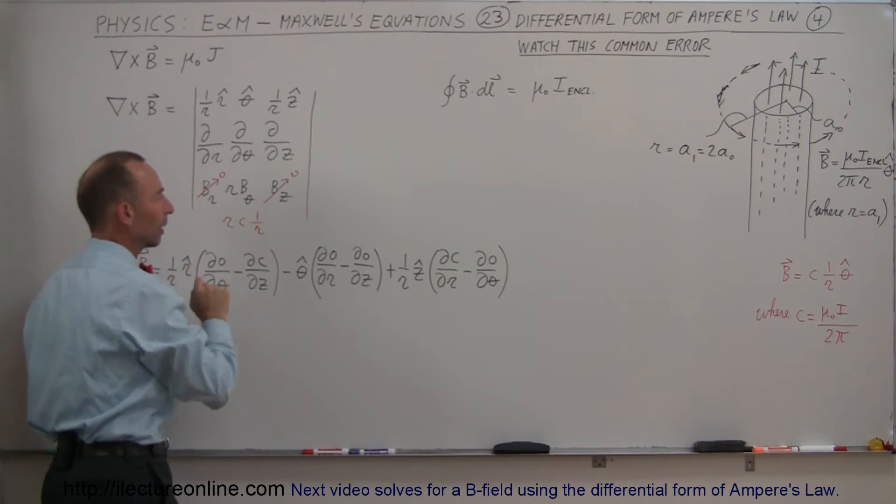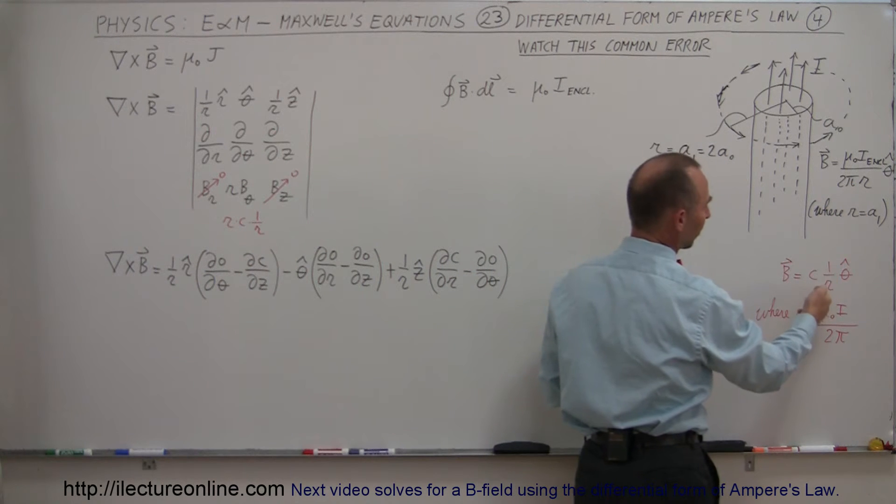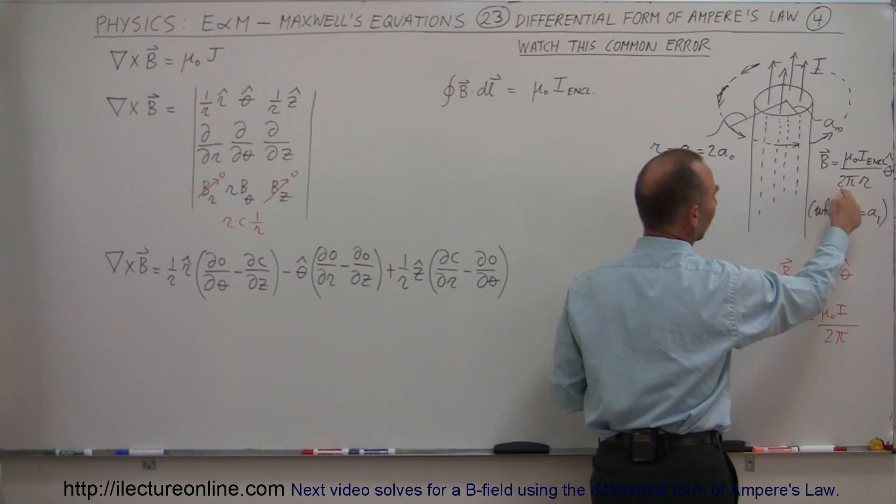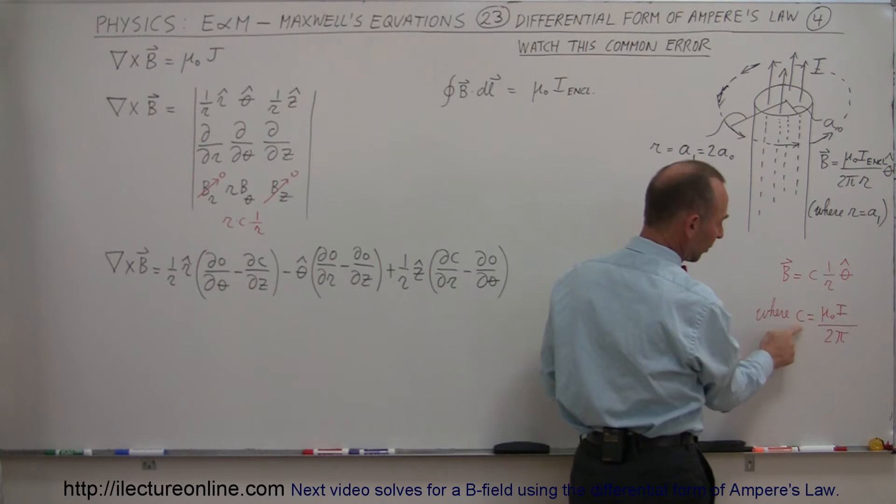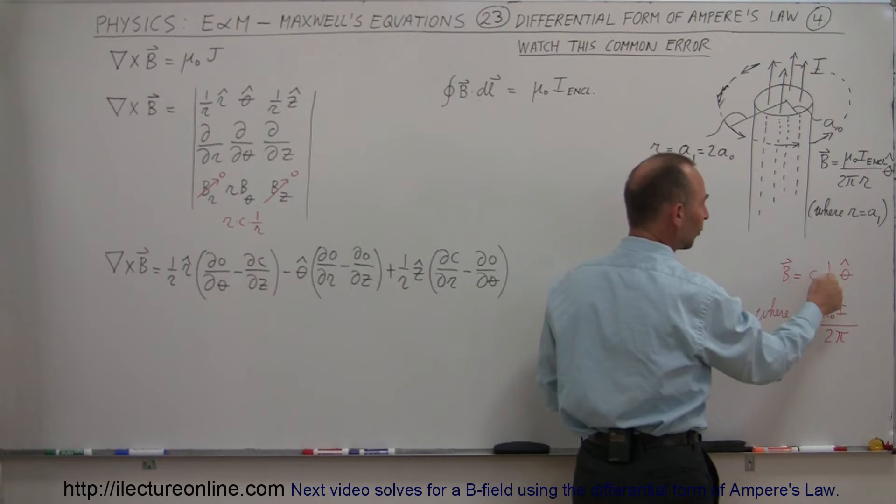And so, the B field in the θ direction—well, if you use this equation right here, you can then say, well, I'm going to replace μ₀i divided by 2π, I'm going to replace it just by a constant, where the constant is equal to this. Then it becomes equal to c, some constant, times 1 over r in the θ direction.